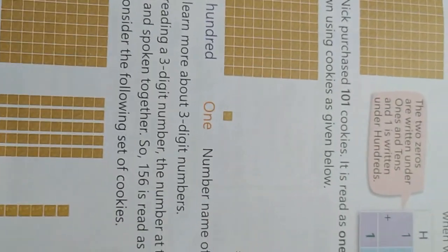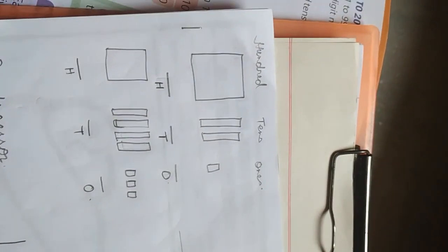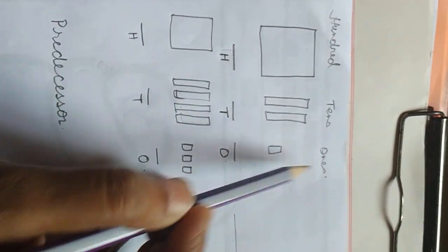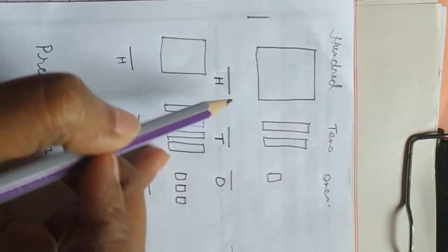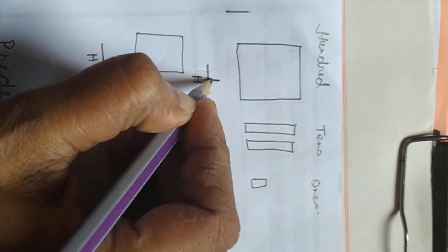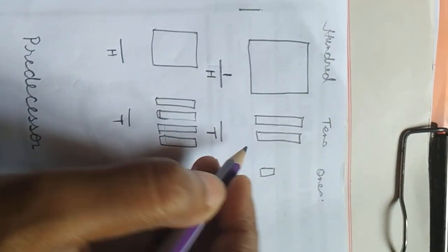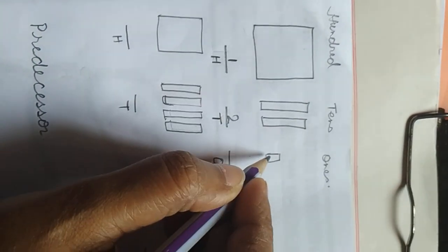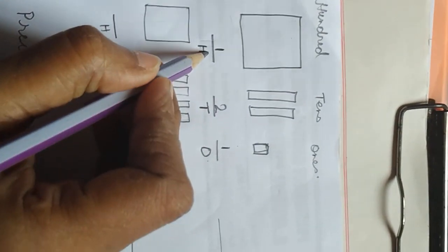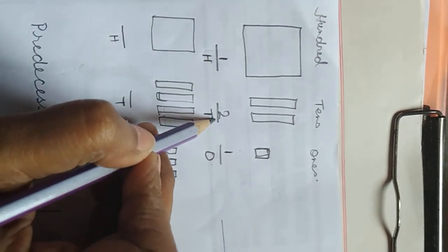Understood? So today I am going to make you understand this. Let us start. Now you can see over here in this worksheet: hundreds, tens place, and one's place is given. This one box contains hundred, so one box is given — one hundred. How many strips are there? Two. And how many small ones are there? Only one. So one hundred, twenty-one.